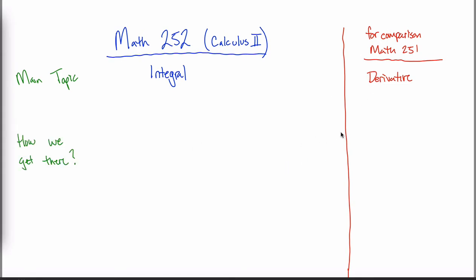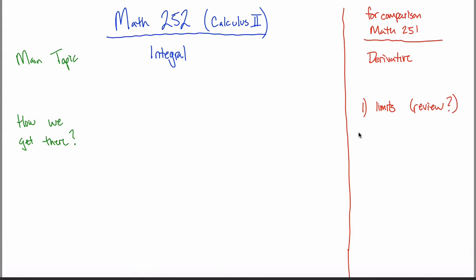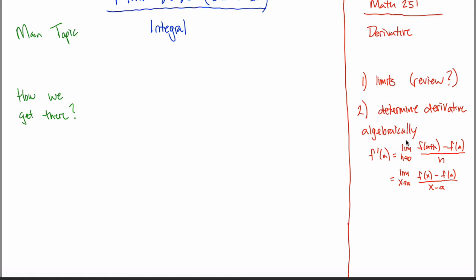How did we study the derivative? It was sort of a three-step process. First, we learned about limits — and depending on your pre-calculus background, this might have been review or completely new. The reason you learned limits is because they allowed you to determine the derivative algebraically. You really did determine the derivative algebraically using things like the definition of the derivative and the difference quotient. If either of those formulas rings a bell, then you remember figuring out the derivative algebraically.